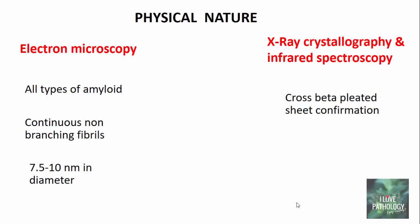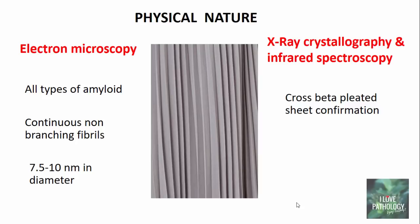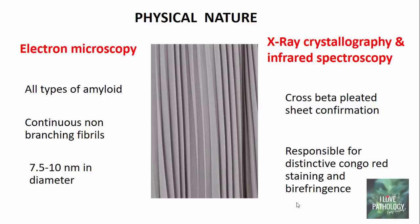The beta pleated sheet is a common shape of the secondary structure of proteins. It consists of strands connected laterally by two or three hydrogen bonds. It is this physical property — the cross-beta pleated sheet conformation — which is responsible for the distinctive staining properties of amyloid, particularly the Congo red staining and its characteristic apple-green birefringence when observed under polarized microscopy.